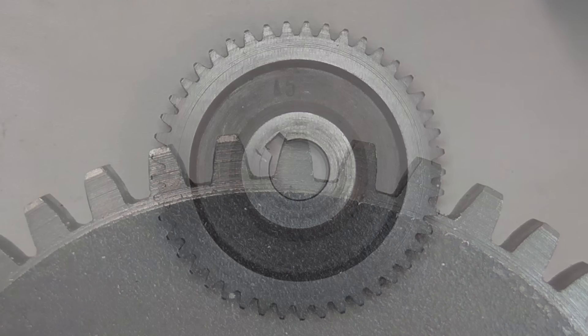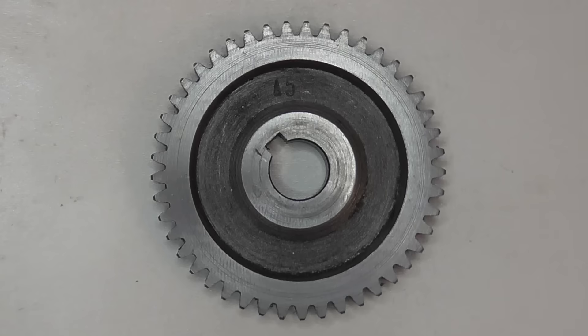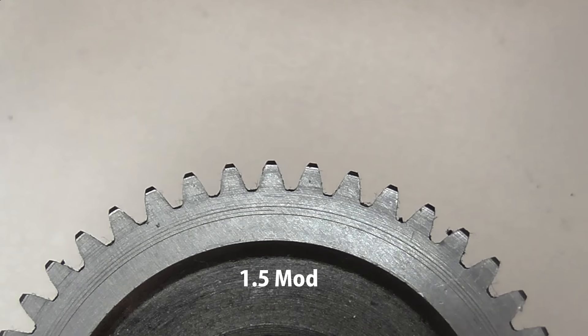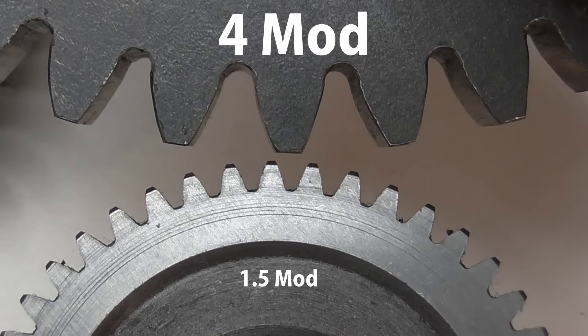For comparison, here is a typical lathe change wheel. Its teeth are 1.5 mod, that's about 16dp. And here is a 4 mod gear. As you might expect, the teeth are over twice as big.